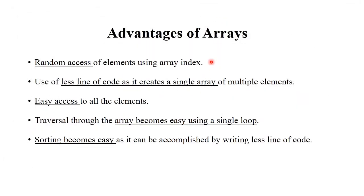Advantages of array: Random access of elements using array index — for example, using a[2] we can directly access the element stored in the second position. It uses fewer lines of code. It creates a single array of multiple elements. It provides easy access to all elements. Traversal through the array becomes easy using a single loop. Sorting becomes easy and can be accomplished by writing fewer lines of code.